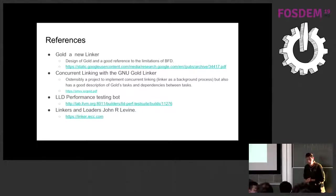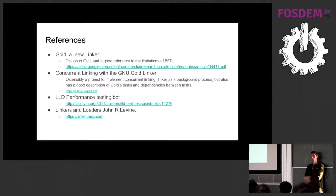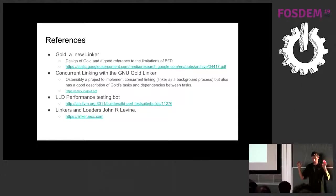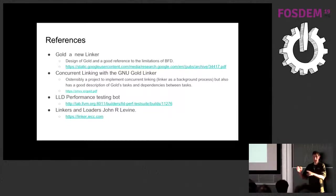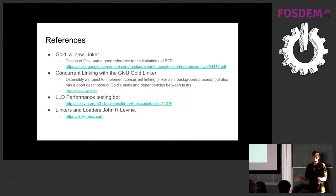Q: How much do you lose by not doing string tail merging at all? A: I didn't try that. If you don't do any merging at all, your output is much bigger, so any time you save by not doing the calculation is offset by how much bigger you have to write out. My guess is it would probably not be that much different to the O1 case where it just merges identical strings — that algorithm just hashes each string and if the hashes match they merge. That's not computationally expensive, so I guess it wouldn't save much, but I haven't done the numbers.